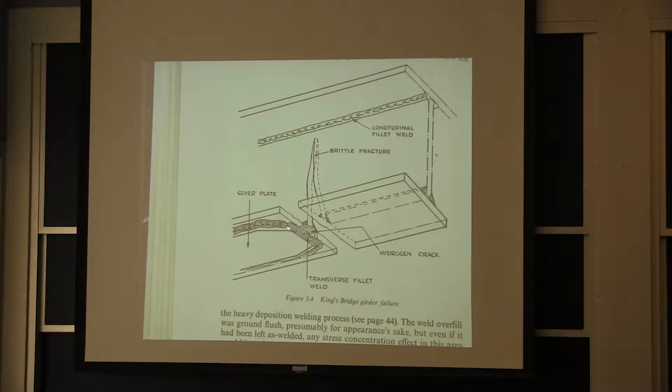That's why today the codes don't allow you to wrap all the way around, because usually it's not adding any strength. They wrapped all the way around, got a hydrogen crack because of all the restraint at that location, and that grew over time in fatigue because it's on the tension side of the beam. Eventually it got long enough and you got a brittle fracture, and the bridge came down.